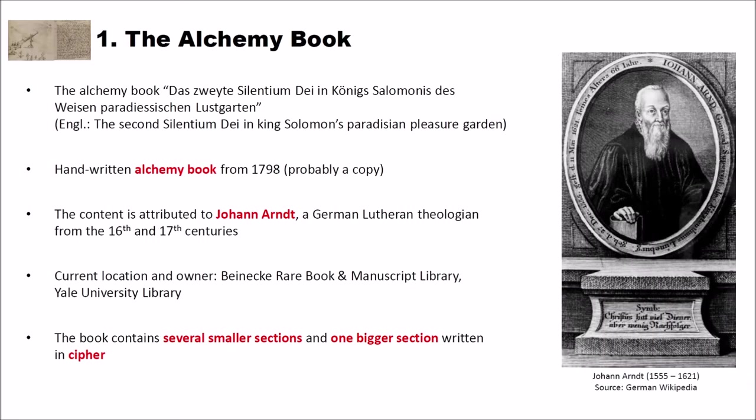The alchemy book Das zweite Silentium Dei in Königs Salomones des Weisen Paradiesischen Lustgarten or the English title The Second Silentium Dei in King Solomon's Paradisiacal Pleasure Garden is an encrypted alchemy book from the sixteenth and seventeenth century. And the book that I present here is a handwritten alchemy book from 1798 and it's probably a copy of the original book. And the content of this book is attributed to Johann Arndt, a German Lutheran Theologian from the sixteenth and seventeenth century. You can see a nice picture from Wikipedia of Johann Arndt here. He lived from 1555 to 1621.